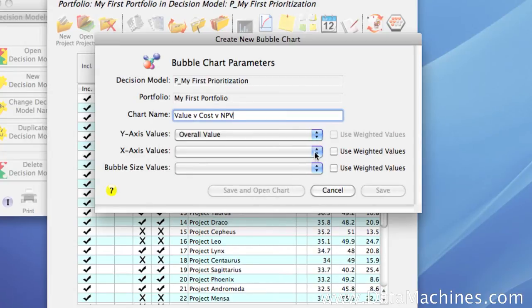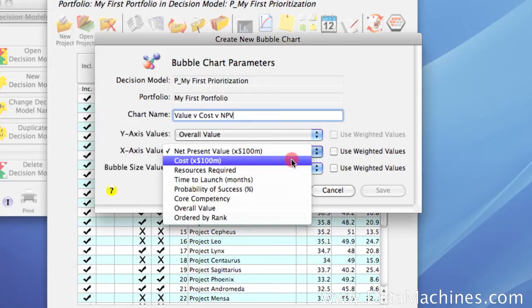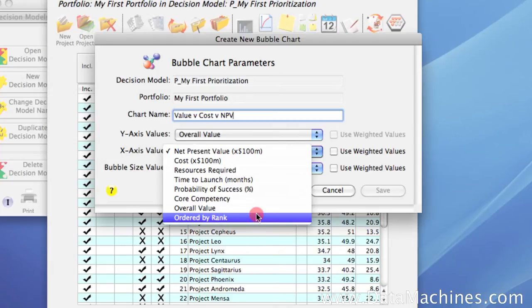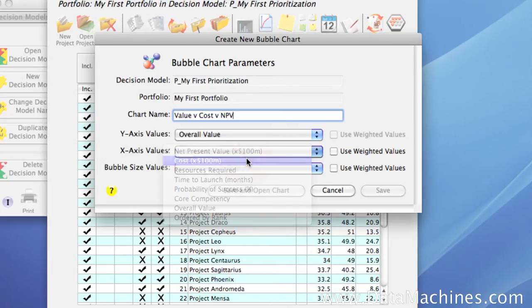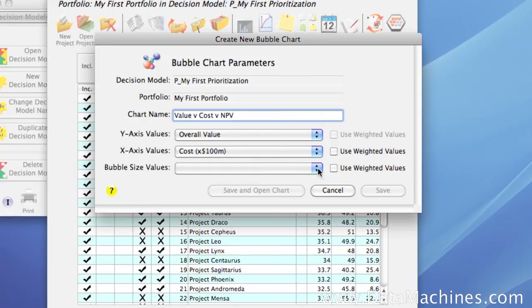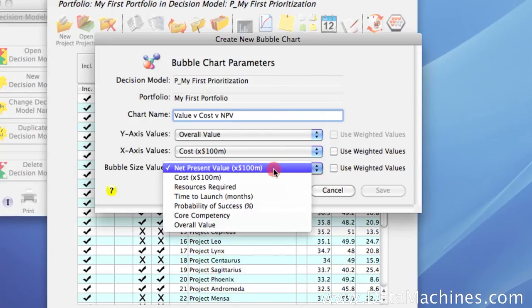For our x-axis, we're going to select Cost. As an aside, note that we can also select Ordered by Rank for the x-axis, meaning that the bubbles would be ordered from highest rank to lowest rank along the axis. And for the bubble size, we're going to select Net Present Value.